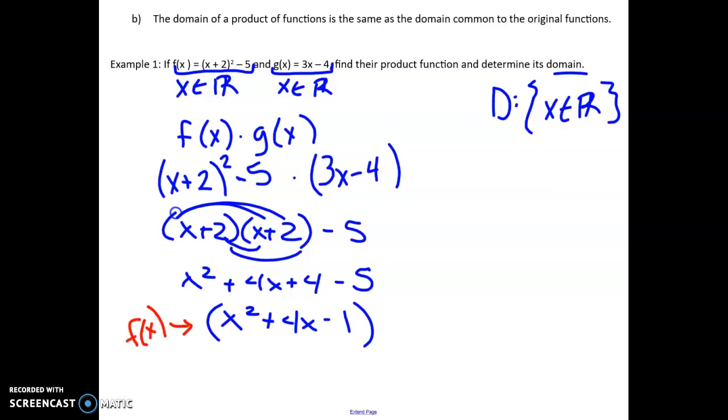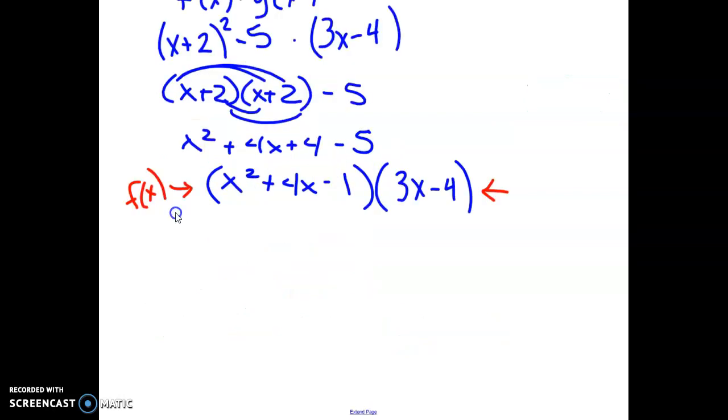Now I have to multiply that by g of x. g of x is 3x minus 4. How do you multiply a binomial by a polynomial like this? Kind of FOIL, yeah. So you have to make sure that each of the front parts gets multiplied to each of the back parts. You actually did do this in grade 10 when there's a section where you multiplied large polynomials.